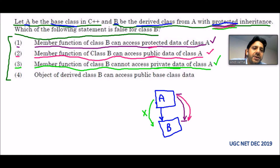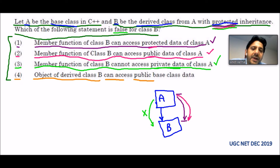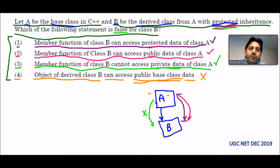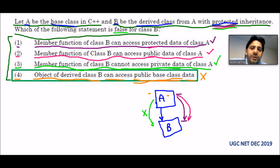So option 4 is for sure the false answer, but we have to verify. The fourth statement says: object of derived class B can access public base class data. By saying 'public base class' they are confusing us — even if the class is public, there can be private data inside it, and not all data can be inherited. So this option is incorrect. They are misphrasing the line to confuse us. The answer for this question is option 4.